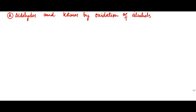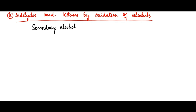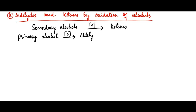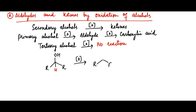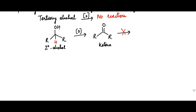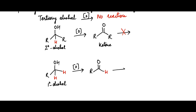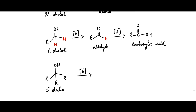The first method is synthesis of aldehydes and ketones by oxidation of alcohols. Secondary alcohols on oxidation give ketones. Primary alcohols on oxidation give aldehydes, which on further oxidation give carboxylic acids. Tertiary alcohols do not undergo oxidation. For example, a secondary alcohol on oxidation gives a ketone, which normally doesn't undergo further oxidation. A primary alcohol on oxidation gives an aldehyde, which can be oxidized to carboxylic acid. Tertiary alcohols do not undergo oxidation.